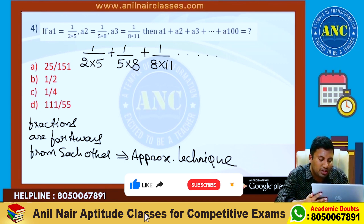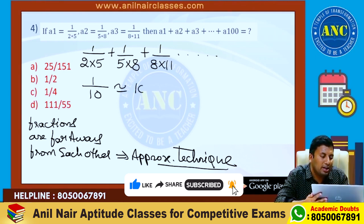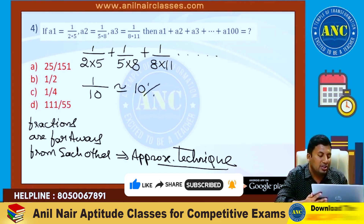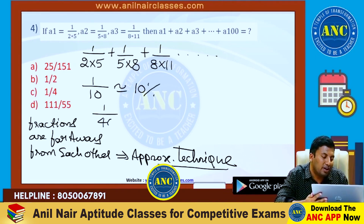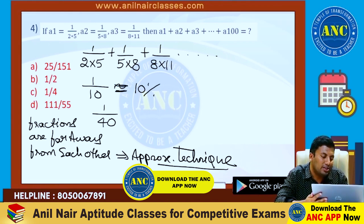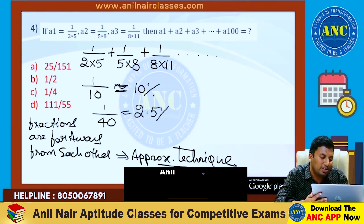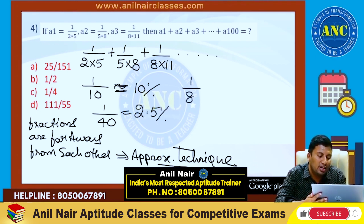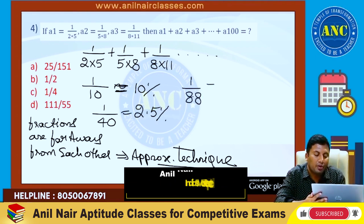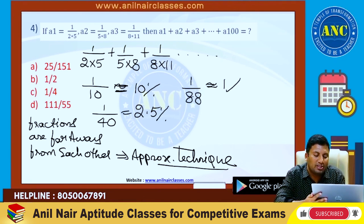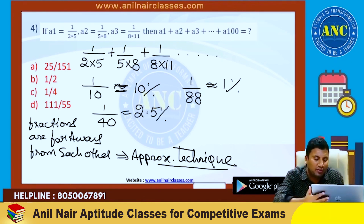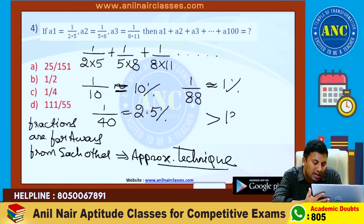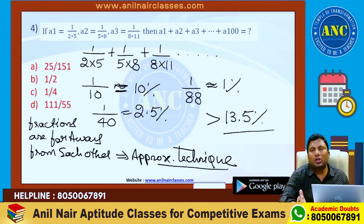What is this approximation technique? 1 by 2 into 5 is 10, so 1 by 10 is 10 percentage. 5 into 8 is 40, so 1 by 40 is 2.5 percentage. 1 by 80 is closer to 1 percentage. 10 plus 2.5 plus 1 — answer should be just greater than 13.5 percentage.